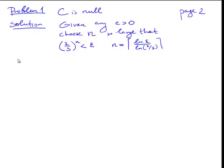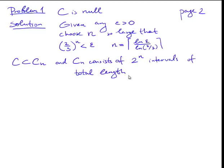Now the next observation is that C is a subset of Cn, and we know that Cn consists of 2 to the power of n intervals and the total length is less than epsilon. Therefore by definition, and we constructed that sequence of intervals, by definition C is a null set.